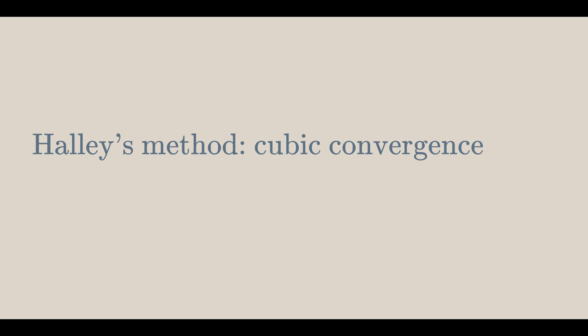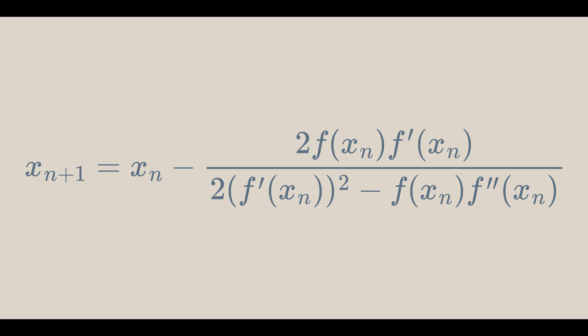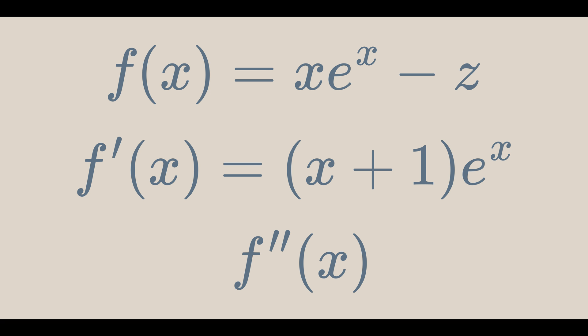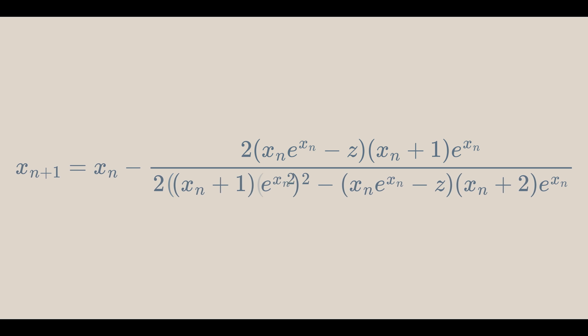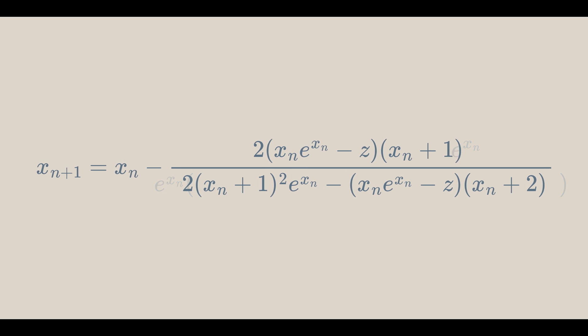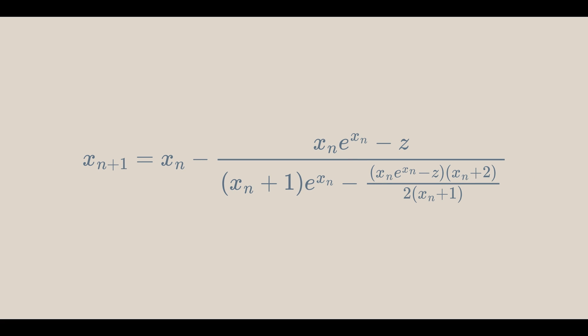This method is currently the most efficient method for computing the Lambert W function. It is better because of its cubic convergence, as opposed to Newton's quadratic convergence. Halley's method states this, and as n grows to infinity, the approximation of a root of f gets better. For Halley's method, we need the second derivative, which again we can use the product rule and factor. Halley's method tells us that we can approximate a root with this. Let's distribute the square, factor out and cancel e to the x sub n. Finally, divide both sides of the fraction by 2 lots of x sub n plus 1.